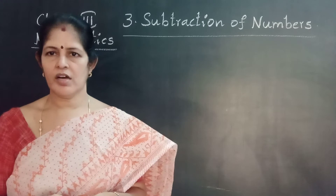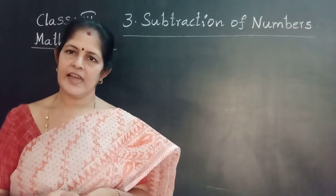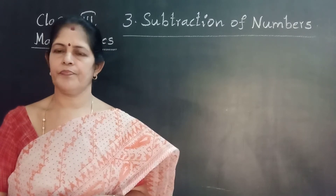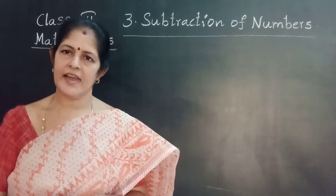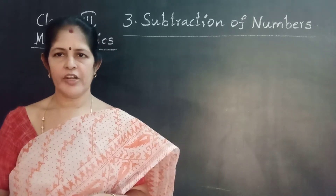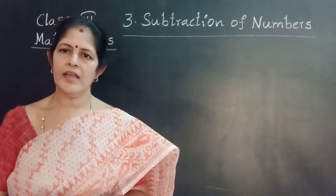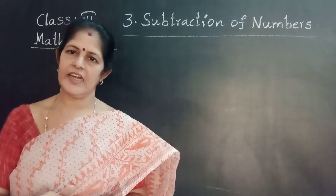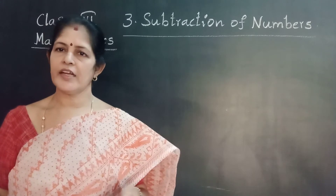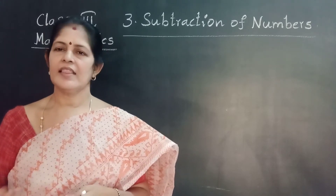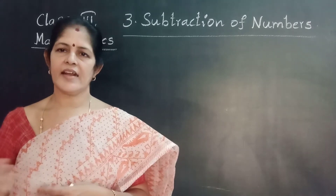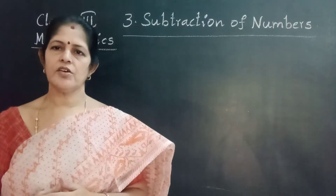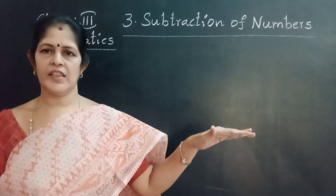In this chapter you have already learnt subtraction of a three-digit number from a three-digit number, without regrouping and with regrouping, and subtraction of four-digit numbers from four-digit numbers, without regrouping and with regrouping. Next we are going to check the subtraction — that is, we are going to do verification to confirm whether our process and answer are correct or wrong.